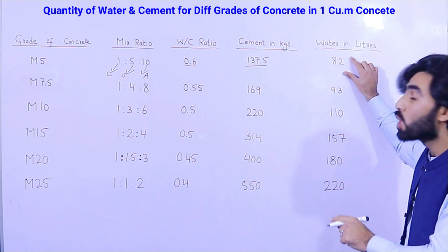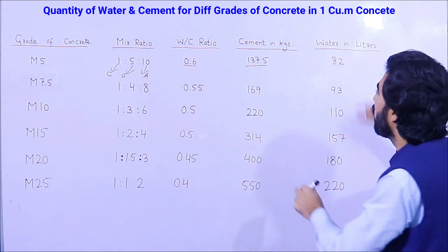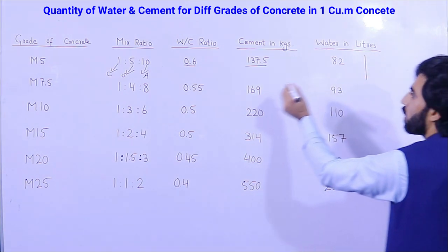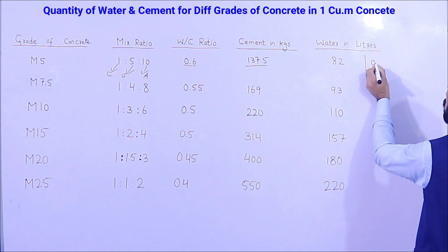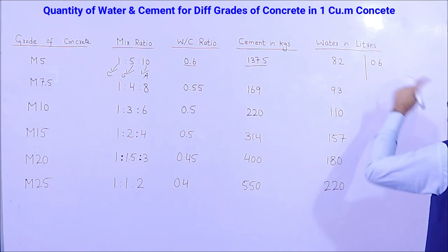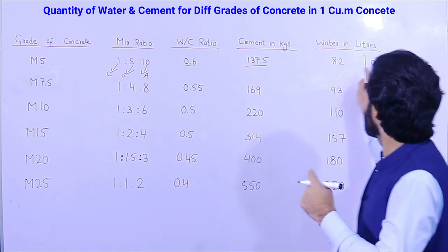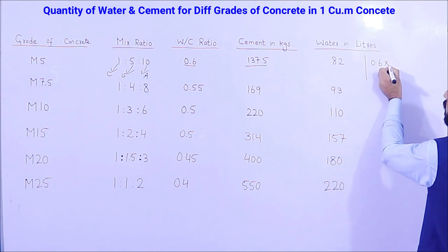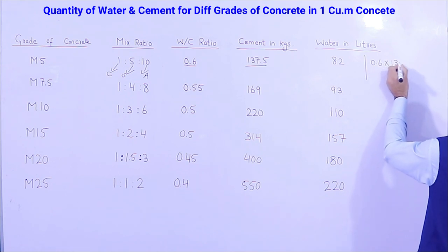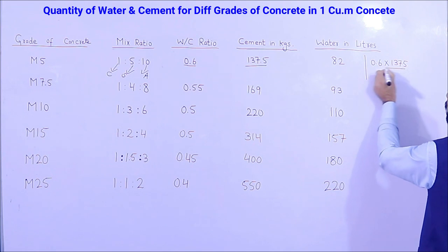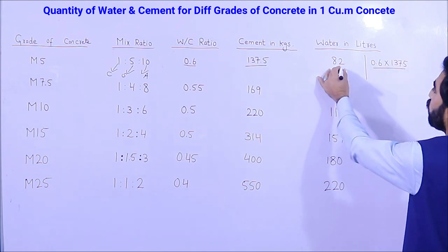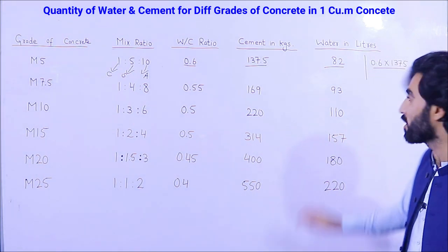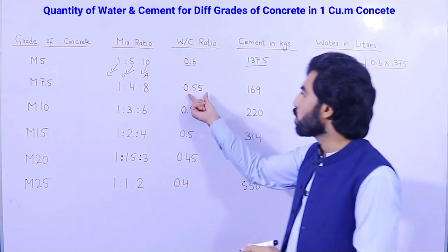For one cubic meter of M5 grade concrete, you require 137.5 kg of cement and 82 liters of water. The calculation is: water-cement ratio 0.6 multiplied by 137.5 kg cement equals 82 liters of water.